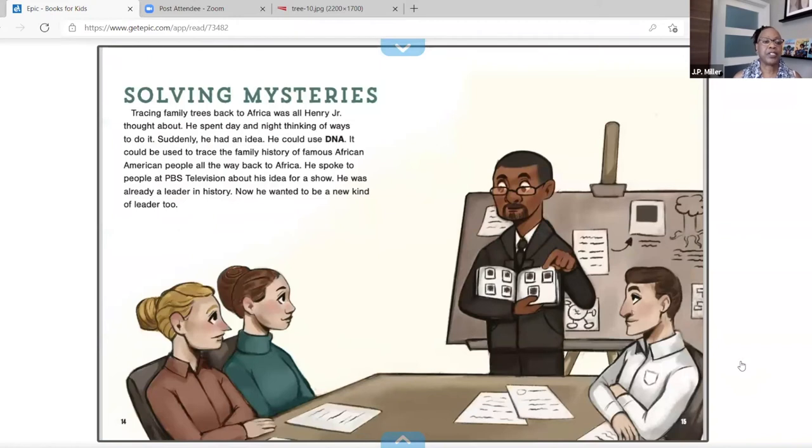Solving mysteries. Tracing family trees back to Africa was all Henry, Jr. thought about. He spent day and night thinking of ways to do it. Suddenly, he had an idea. He could use DNA. It could be used to trace the family history of famous African American people all the way back to Africa. He spoke to people at PBS television about his idea for a show. He was already a leader in history. Now he wanted to be a new kind of leader, too.